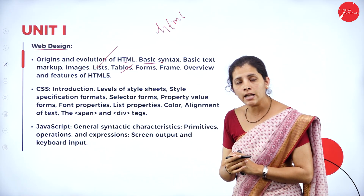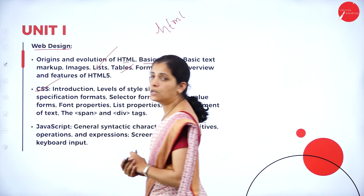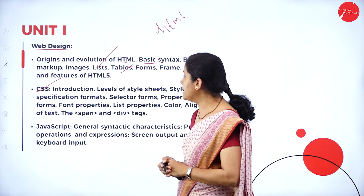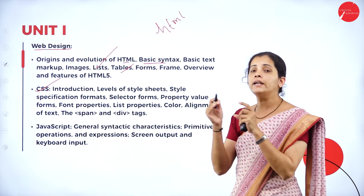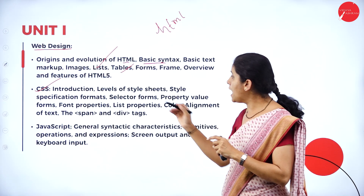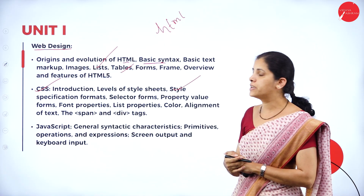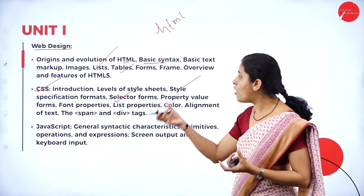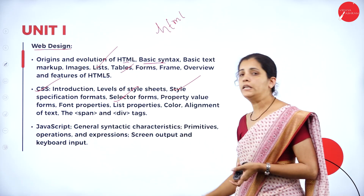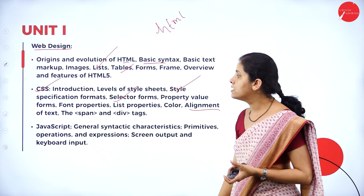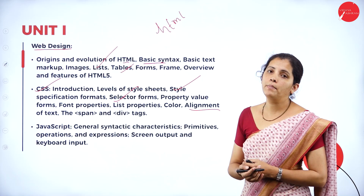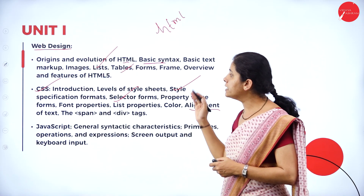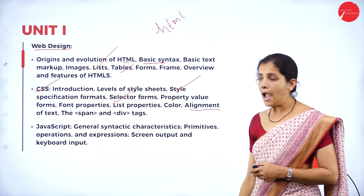The second chapter is CSS — Cascade Style Sheet. I am going to learn different types of CSS, along with style specification format, selector forms, property values, font property, list property, colors, alignment of text, and spanning — how I can divide frames. All those things I am going to learn in my second chapter.